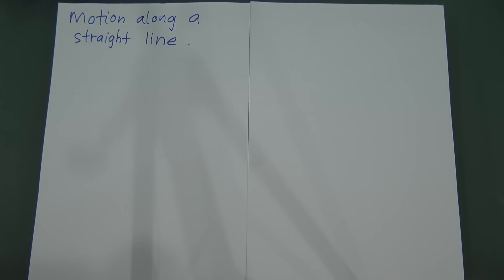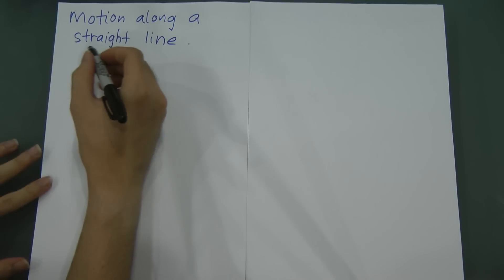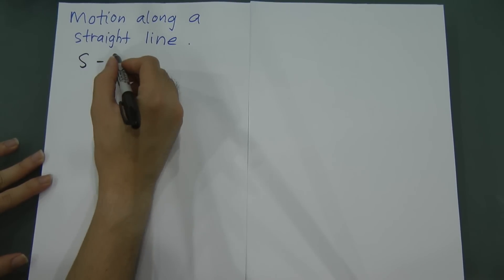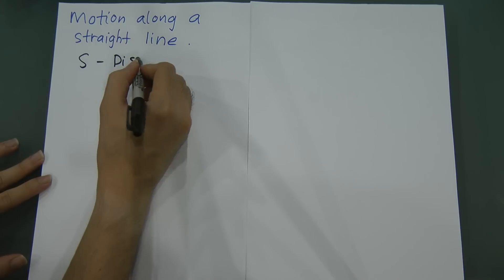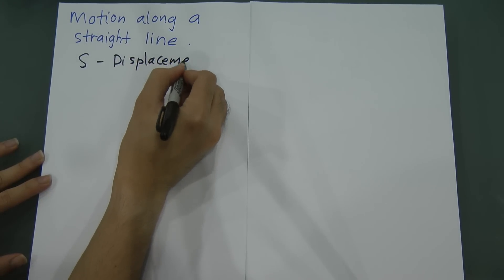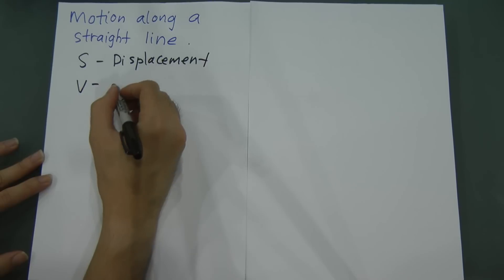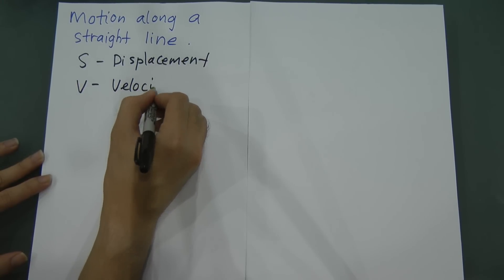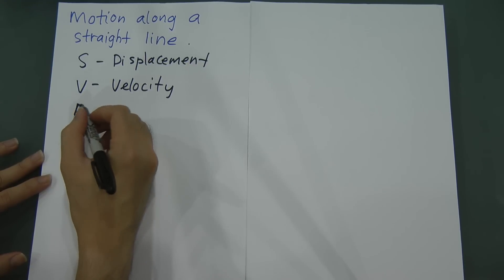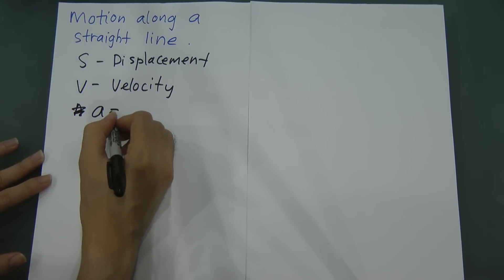I'll explain another chapter called motion along a straight line. In this chapter we have three important things: s stands for displacement, v stands for velocity, and a stands for acceleration.